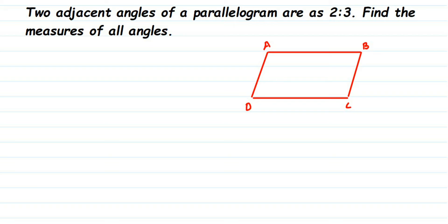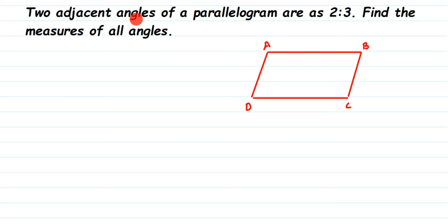Hey everyone, here's a question on parallelogram: two adjacent angles of a parallelogram are in ratio 2 is to 3. Find the measure of all angles. They have given the ratios of two angles, that is adjacent angles, which is 2 is to 3. We have to find out the measure of all the angles.